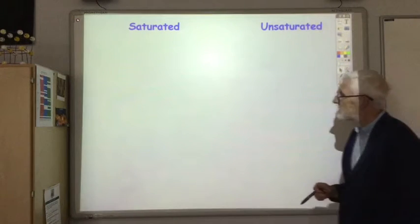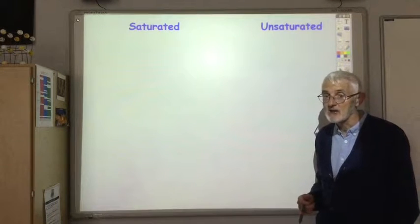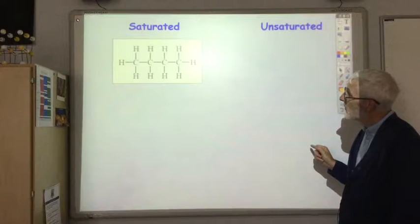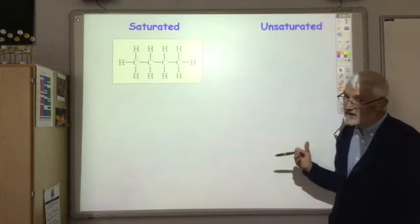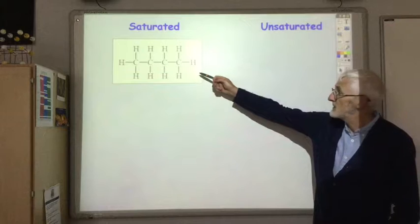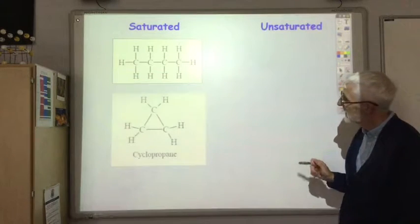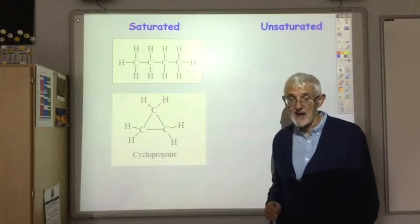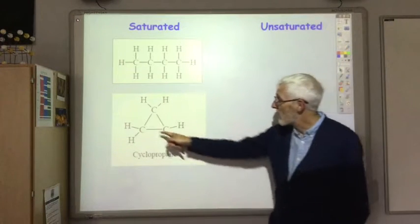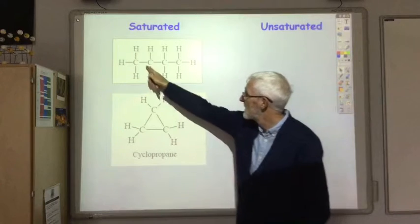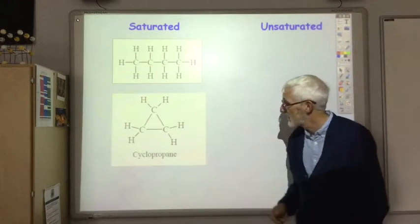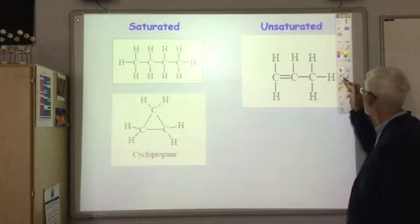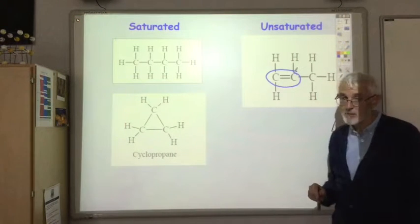Next I want to explain the difference between a saturated hydrocarbon and an unsaturated hydrocarbon. The two homologous series we looked at in the first video - the alkanes and the cycloalkanes - are saturated hydrocarbons, by which you mean all the carbon-carbon bonds are single bonds. Whereas the alkenes are unsaturated because they contain a carbon-carbon double bond.